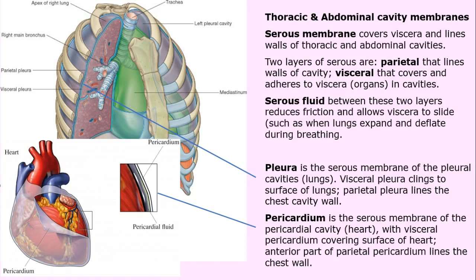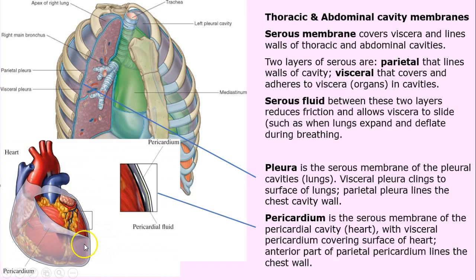The pericardium — 'peri' means around the heart. There's a serous membrane around the heart that can become inflamed in some diseases. There's an anterior part that lines the chest wall. The heart is encased in this membrane, and only rarely do we have infection in that serous fluid.